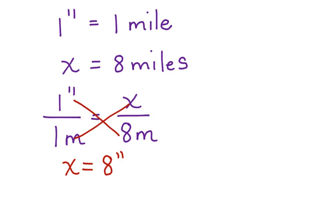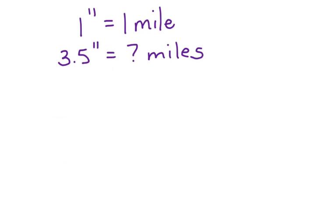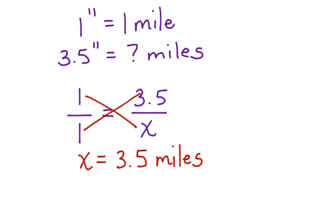Let's take a look at one more using the same scale. If 1 inch equals 1 mile, how many miles is 3.5 inches? Let's write a proportion. Cross multiply and solve. Our answer is 3.5 miles.